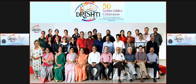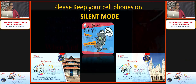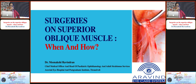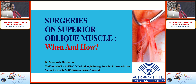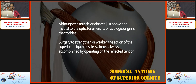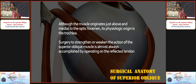Dr. Meenakshi Ravindran speaks on surgeries on the superior oblique — when and how. Although the muscle originates near the sphenoid, what matters surgically is only after the trochlea, which is the functional origin. All surgeries are performed from the post-trochlear segment. Important to remember are the anterior fibers and posterior fibers — unlike the inferior rectus, only in the superior oblique do we discuss anterior and posterior portions. The anterior one-third is responsible for intorsion and the posterior portion for abduction and depression.